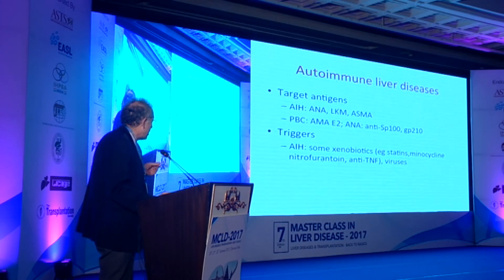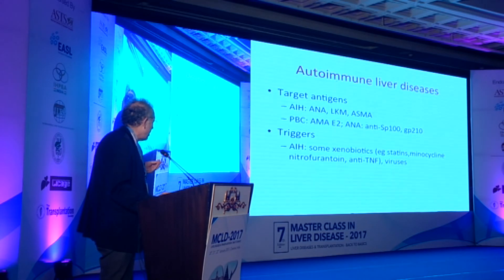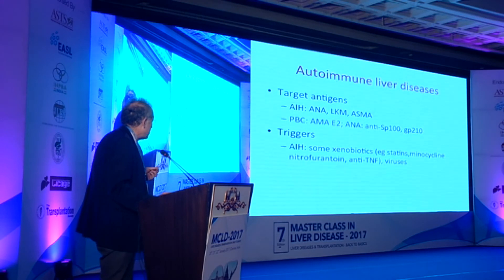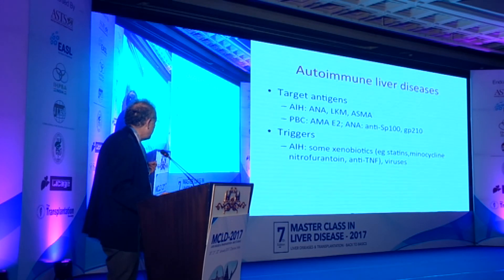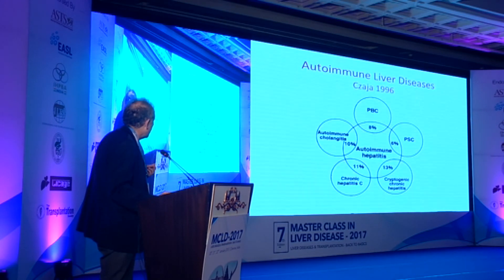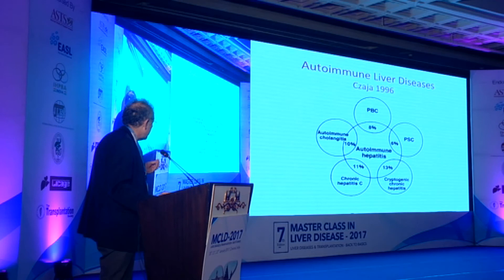There was a debate about ten years ago showing that when hepatitis C first came to interest, there was a long debate as to whether hepatitis C could induce autoimmune hepatitis. Once the specific antibodies came and one could measure RNA accurately, it became very clear that hepatitis C was associated with autoantibodies, but there was no true overlap with autoimmune hepatitis. For PBC, a large number of drugs, bacteria, and viruses have been implicated, but none have been proven.